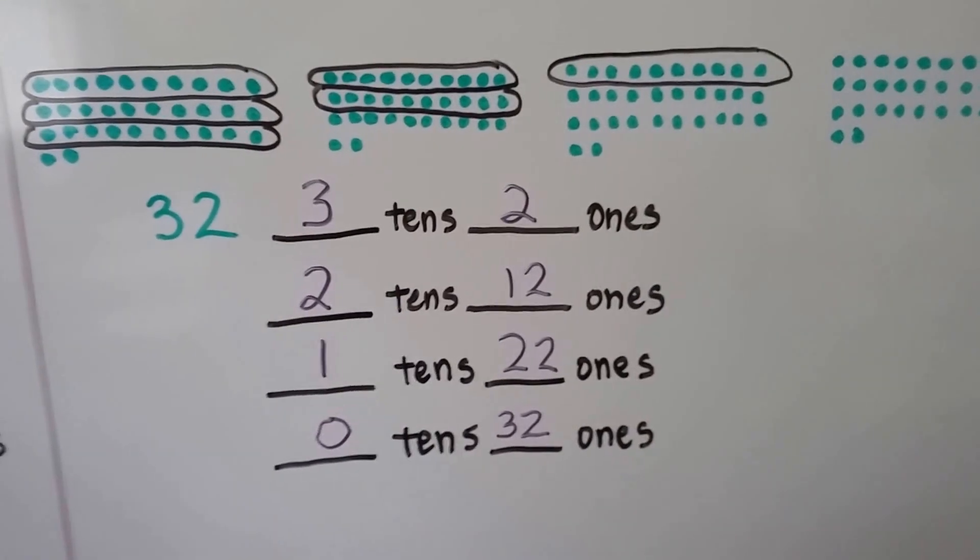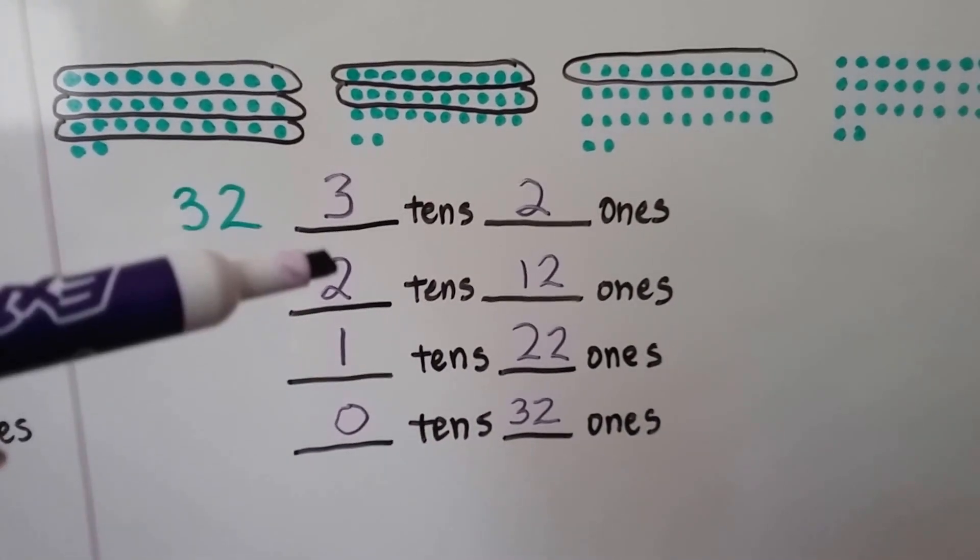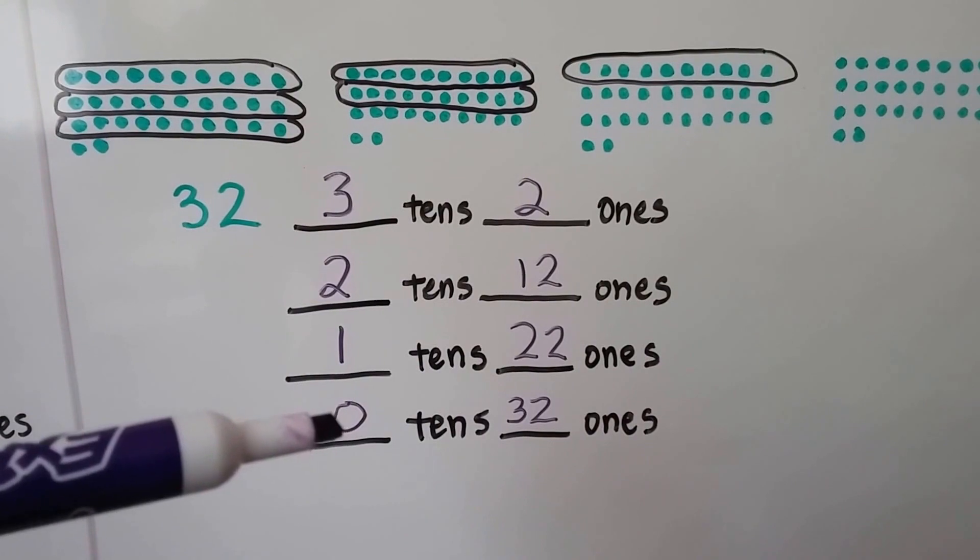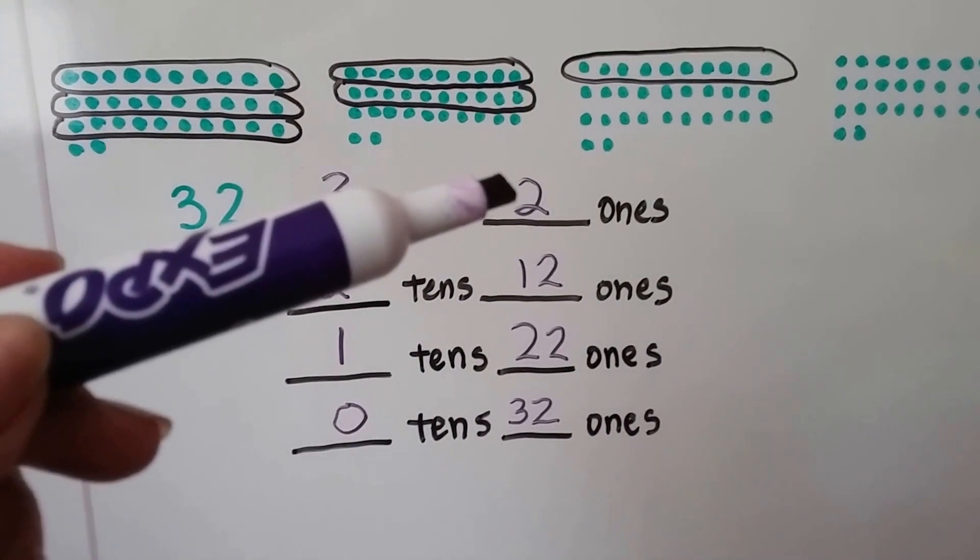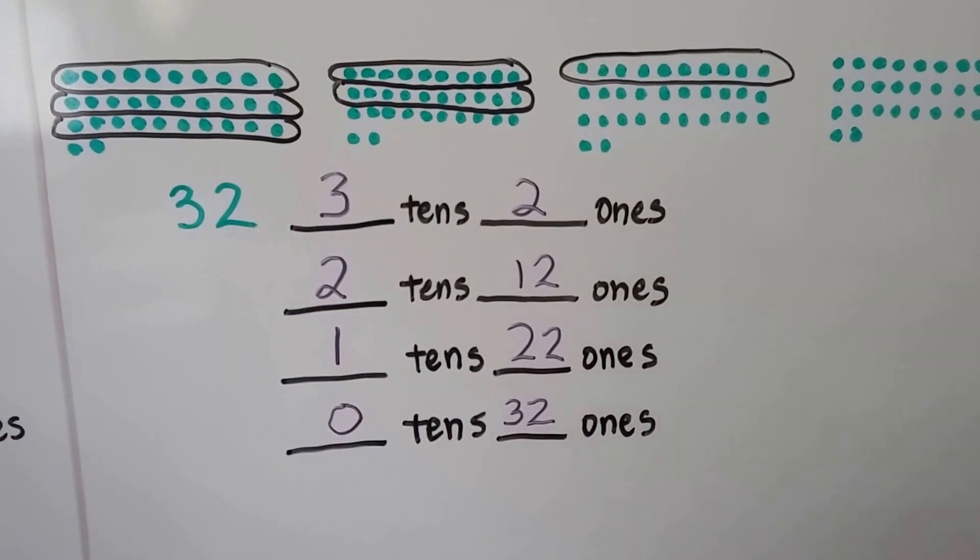Do you see the pattern? As the tens went down—three, two, one, zero—the ones went up from 2 to 12 to 22 to 32.